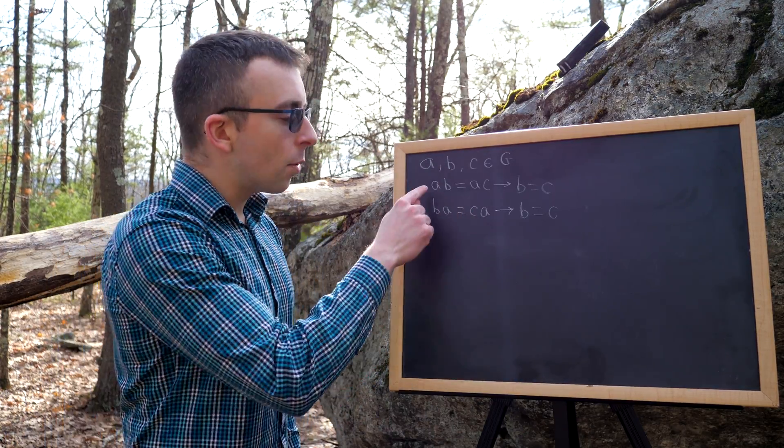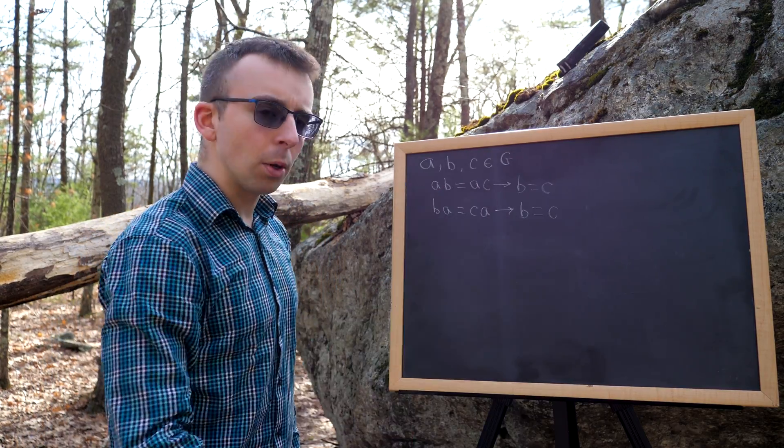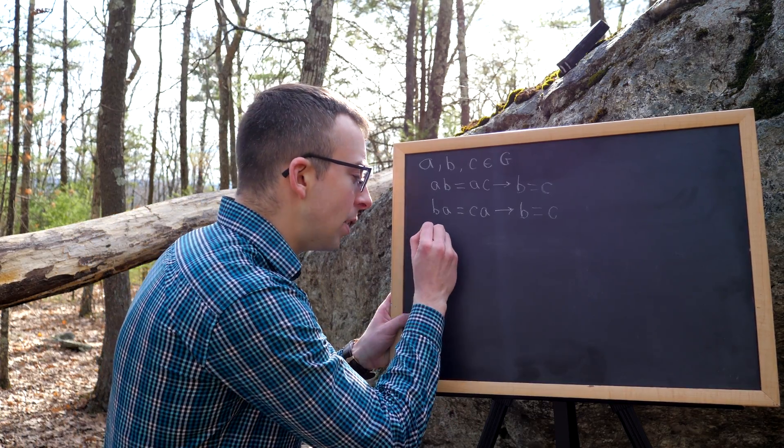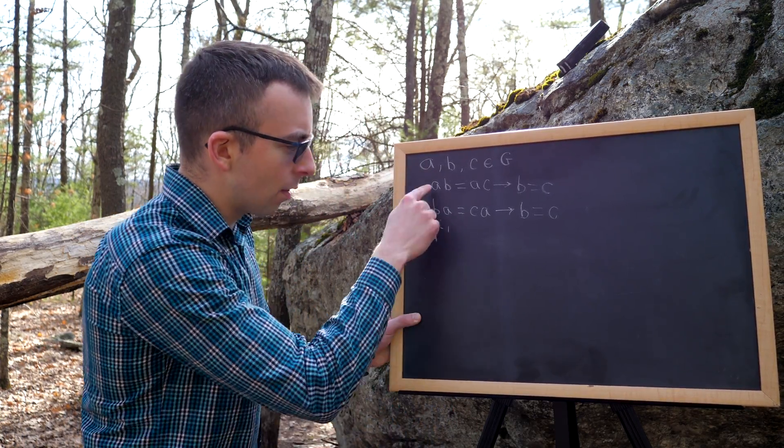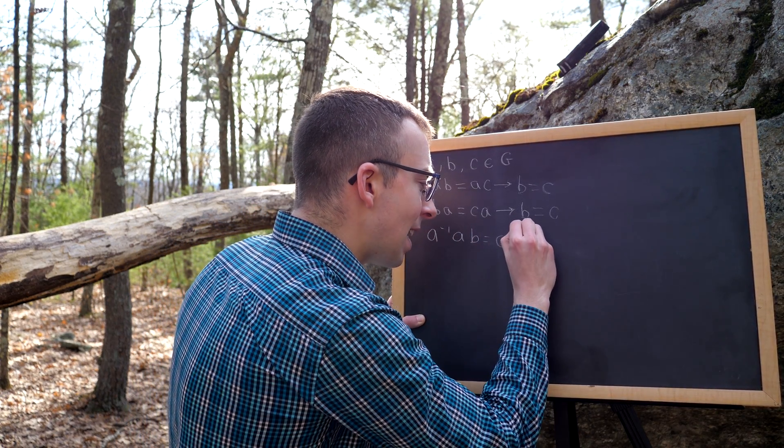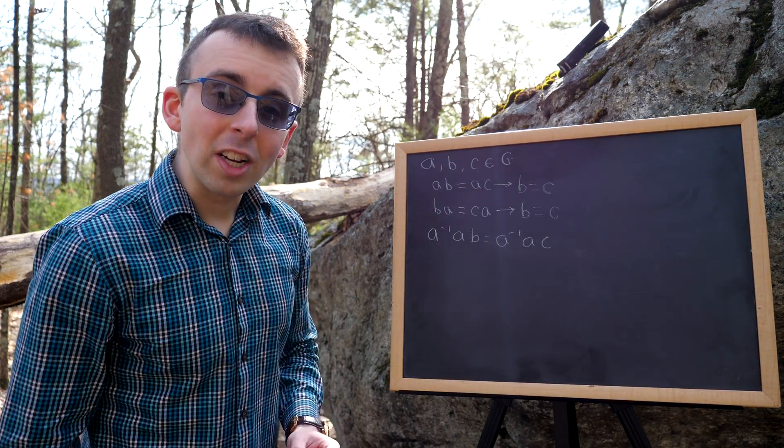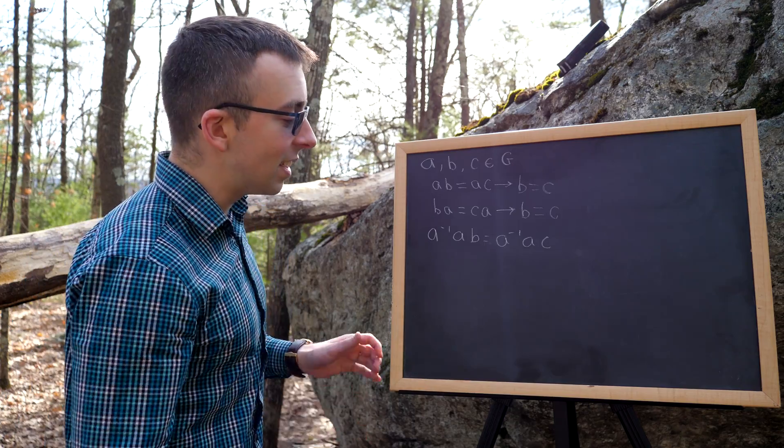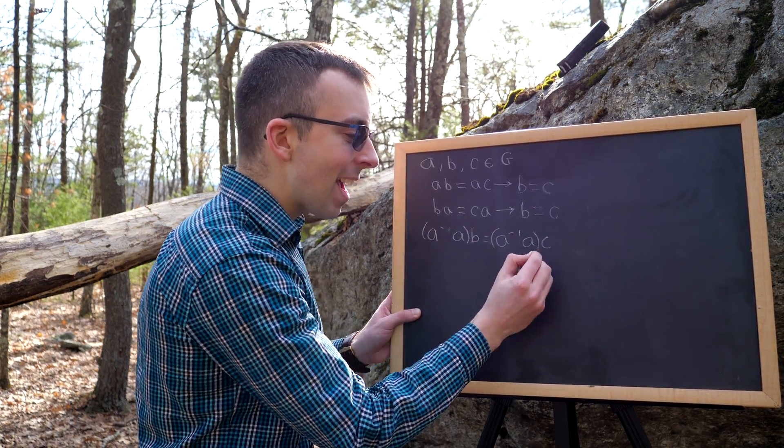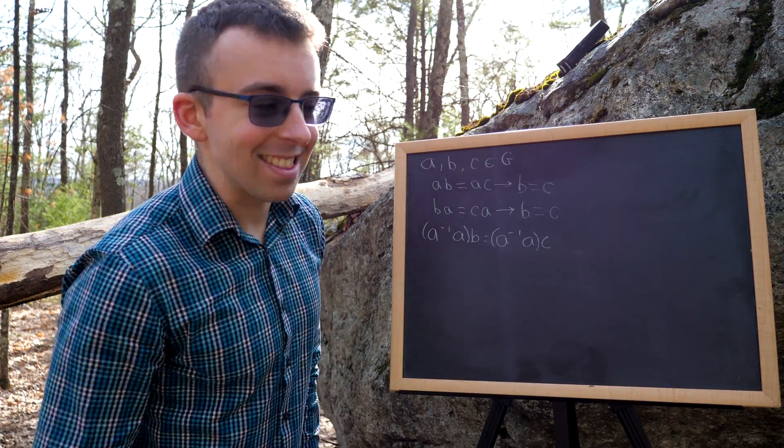Since this is a group, we know that A has an inverse element. So we can multiply both sides of the equation by A inverse on the left. If we do that, we get that A inverse times AB is equal to A inverse times AC. Now we can use the perhaps underappreciated group property of associativity to associate the A inverses with the A's.